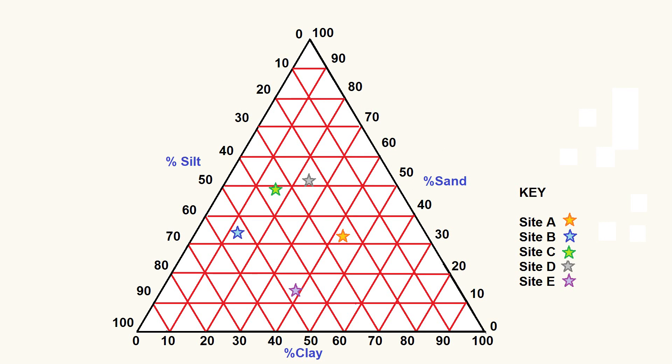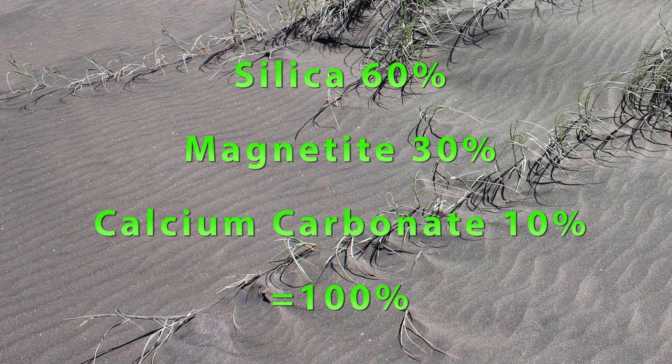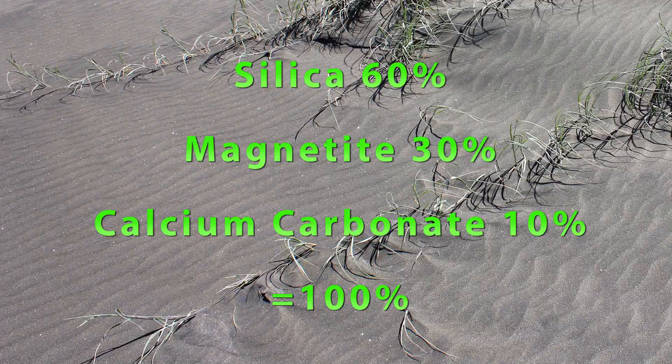A triangular graph, also known as a ternary plot, shows the relationship between three sets of variables. They are useful when three data sets combined add up to 100 percent.